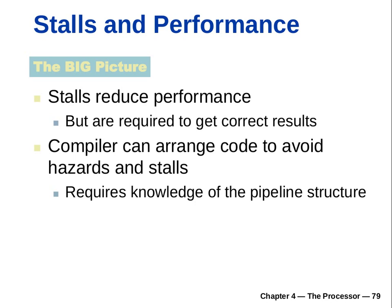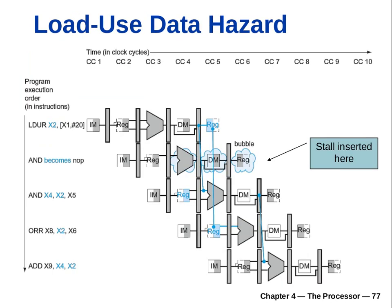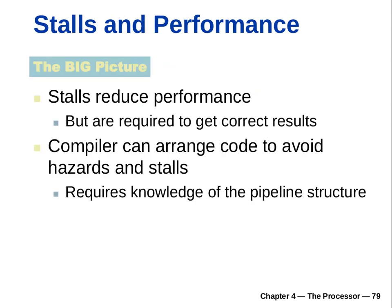Stalls and performance — the big picture: stalls reduce performance because you waste clock cycles. But you have to make a trade-off between correctness of execution and performance — correctness is more important. Compilers can arrange code to avoid hazards and stalls, and this requires knowledge of the pipeline structure. This is why fewer people write assembly from scratch — compilers are actually better at reordering instructions to take advantage of the hardware architecture.